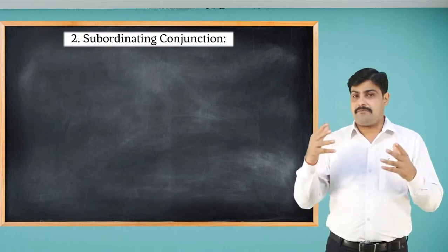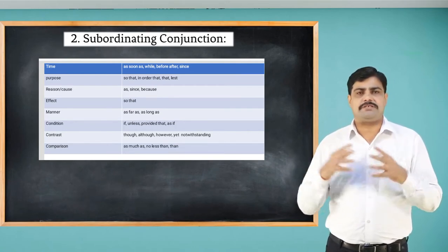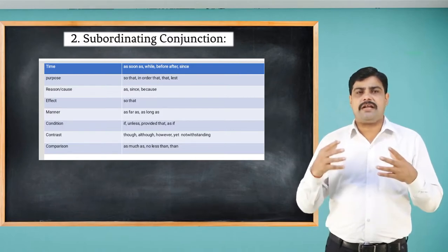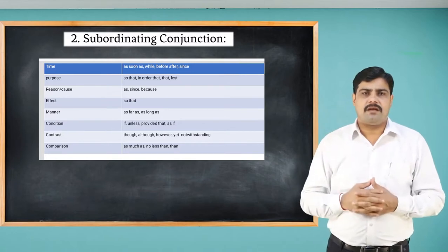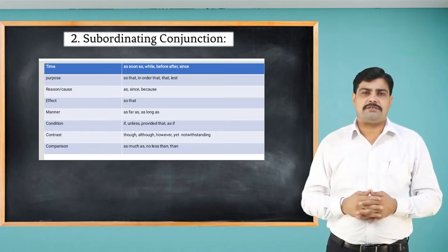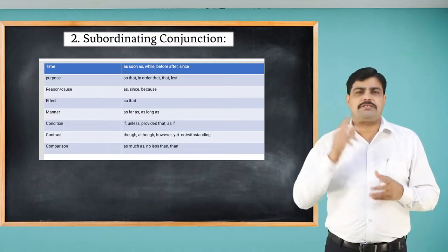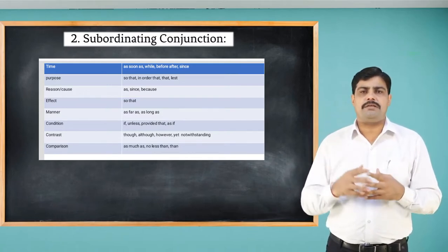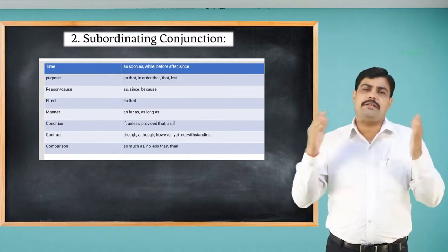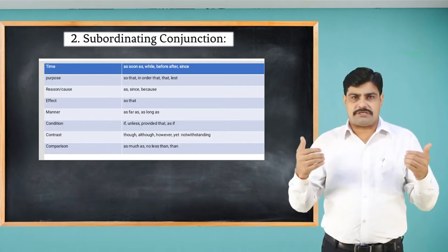For time, we use: as soon as, while, before, after, since. For purpose: so that, in order that, that. For reason and cause: as, since, because. For effect: so that. For manner: as far as, as long as. For condition: if, unless, provided that, as if. For contrast: though, although, however, yet, notwithstanding. For comparison: as much as, no less than, than.